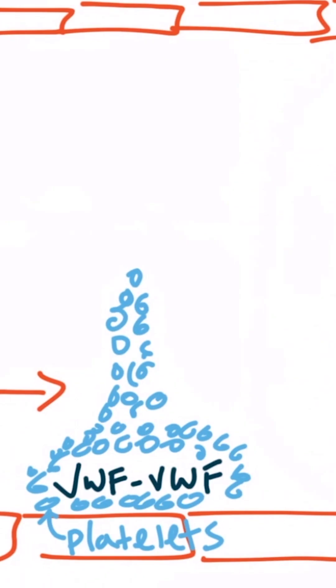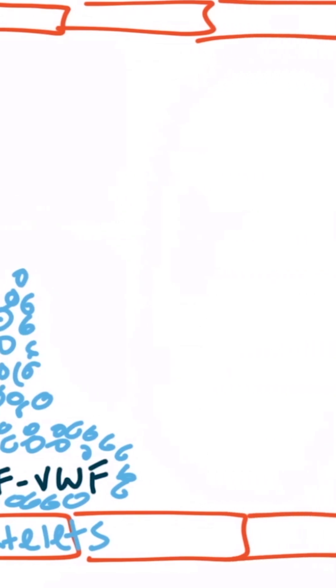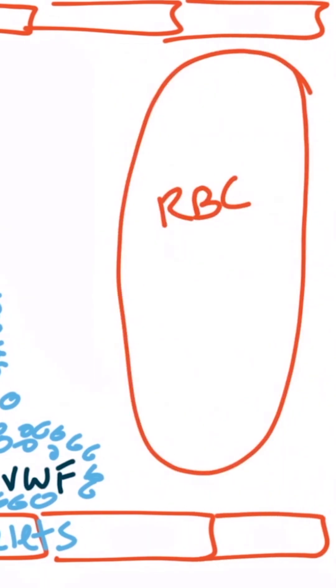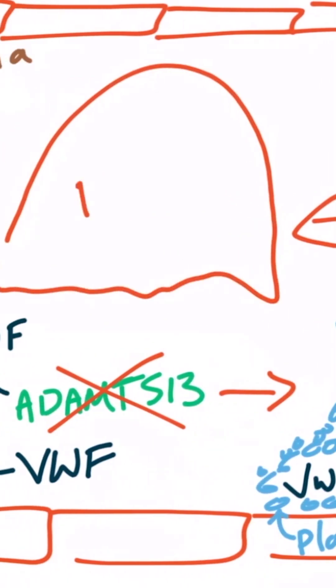As you can imagine, the red blood cells that have to pass through these small blood vessels are partially lysed due to the mechanical interaction with the thrombi. Let's draw a big red blood cell right here. And as it passes through this thrombus, the red blood cell becomes partially lysed. Obviously, the lysis of red blood cells results in hemolysis and anemia. So this is the second unique finding of hemolytic uremic syndrome.